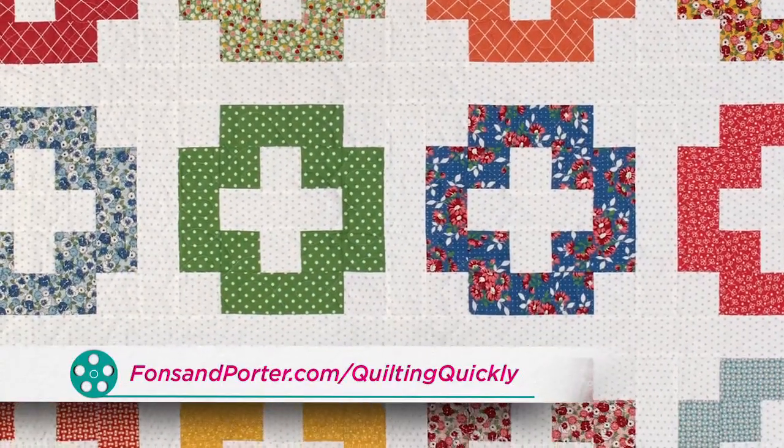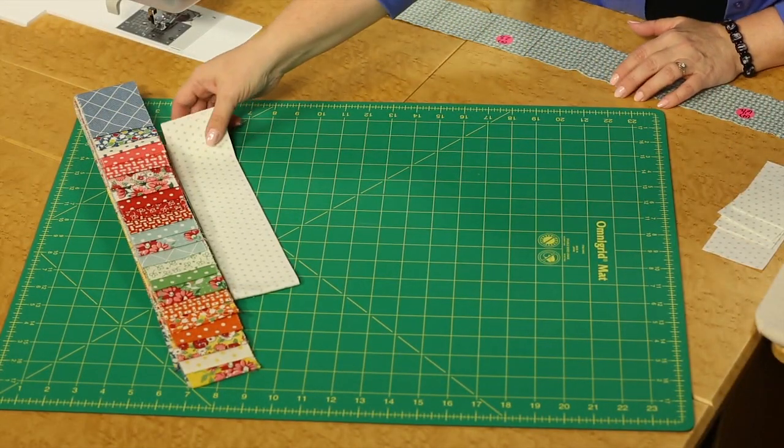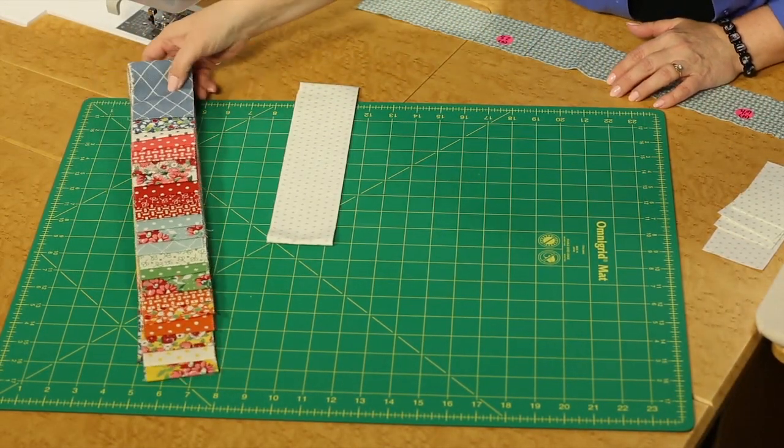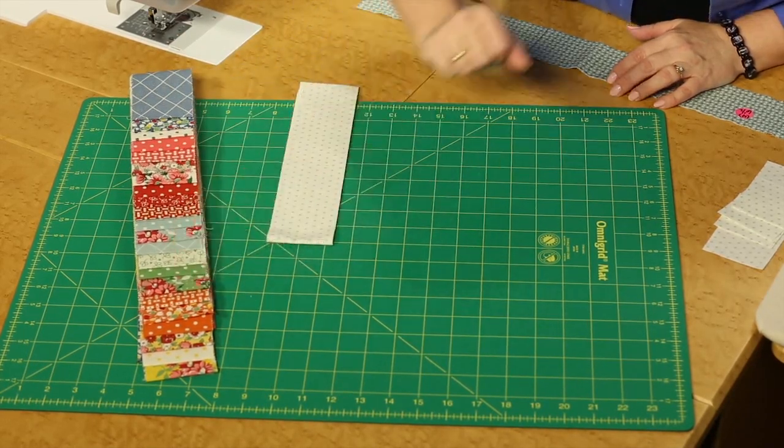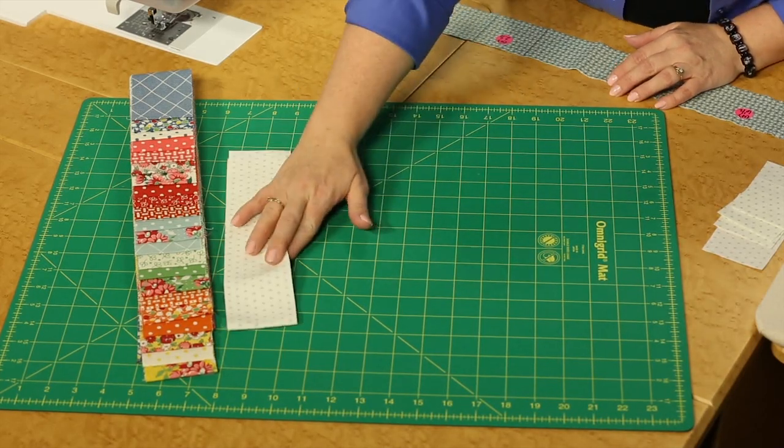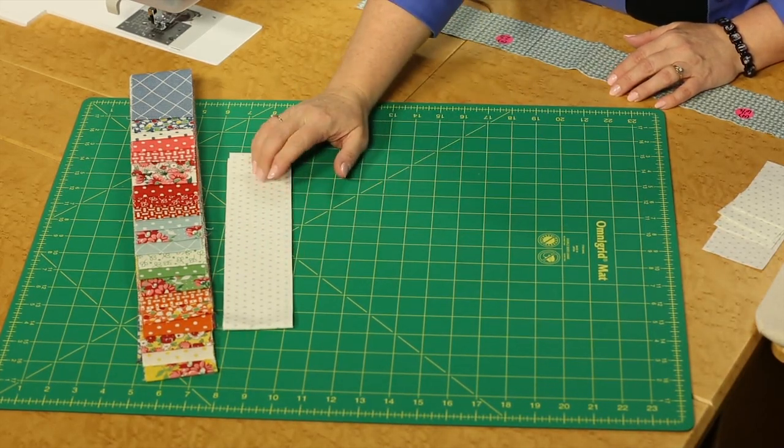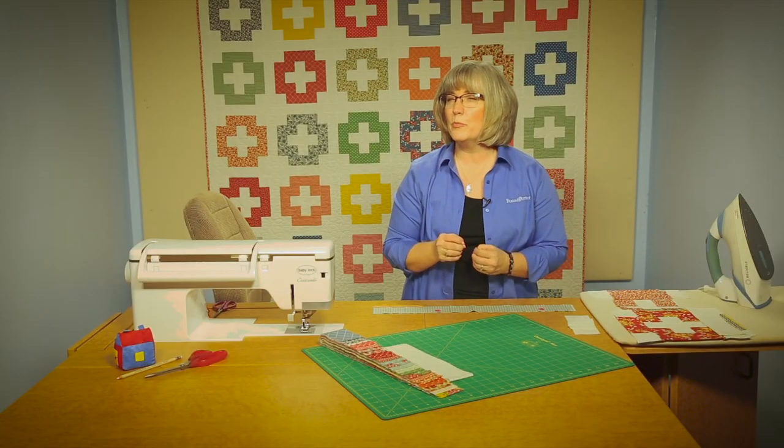If you'd like to purchase this pattern, you can visit our website and order it there. We are going to be using 2 1/2 inch pre-cut strips of fabrics that make us think of the 40s and 50s. It runs the whole gamut from the blues, the reds, the oranges, and the yellows. Then we're going to pair it with a fun cream and tan dot. That gives a little bit of texture to the background, but not distracting.